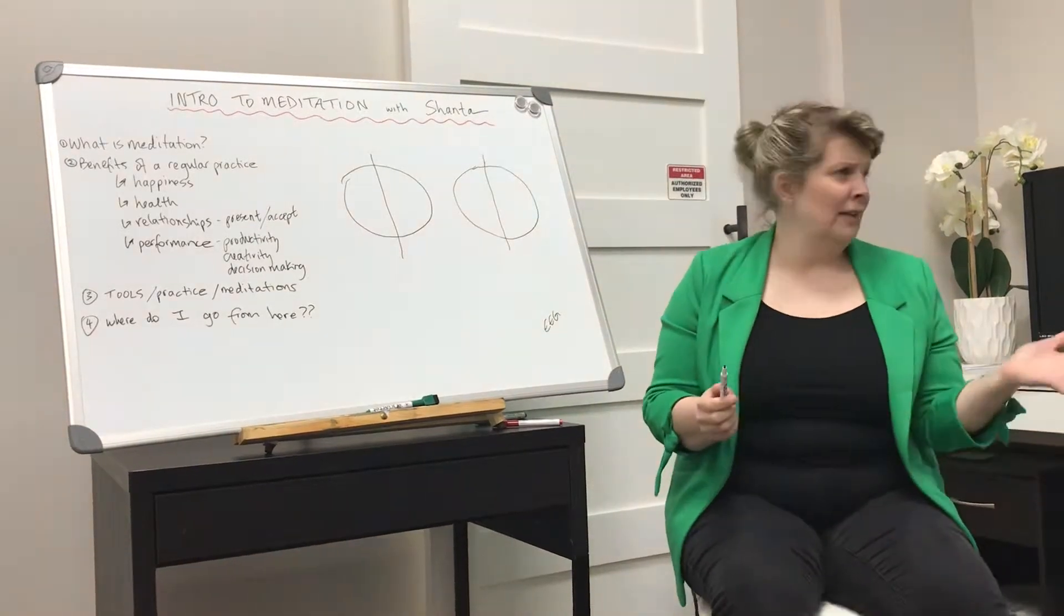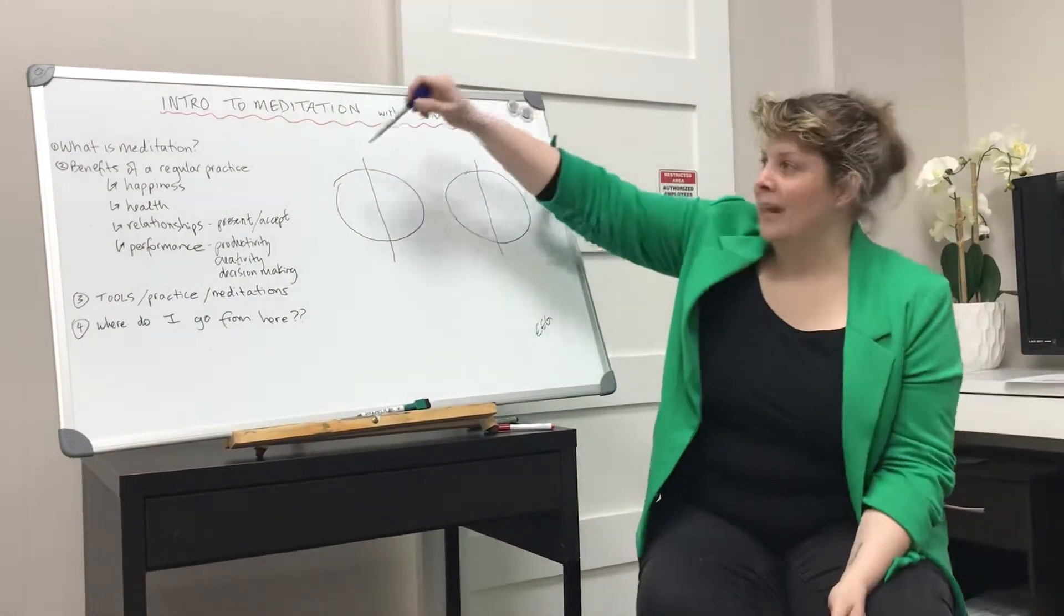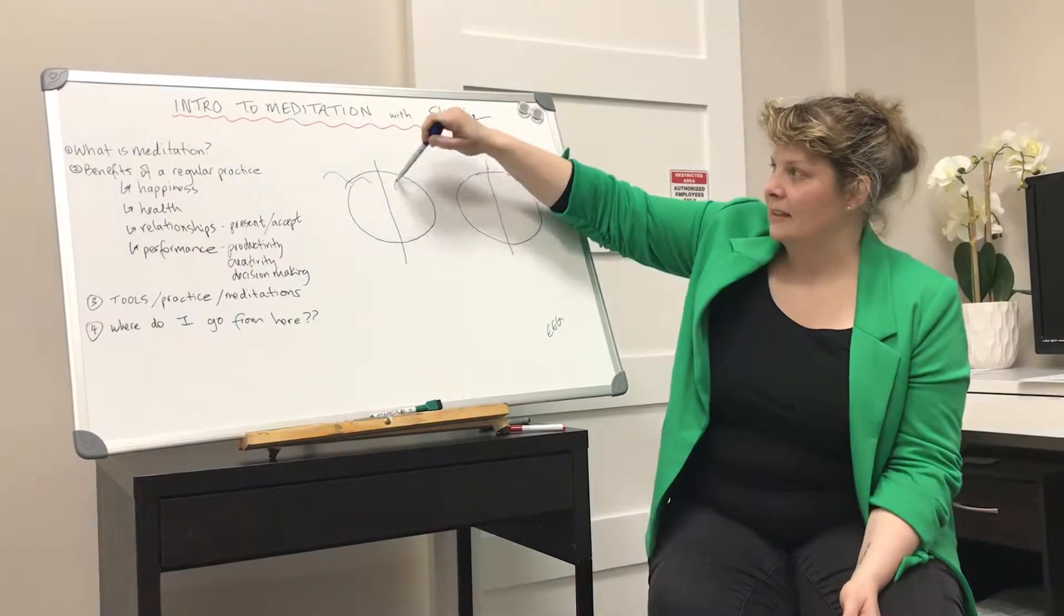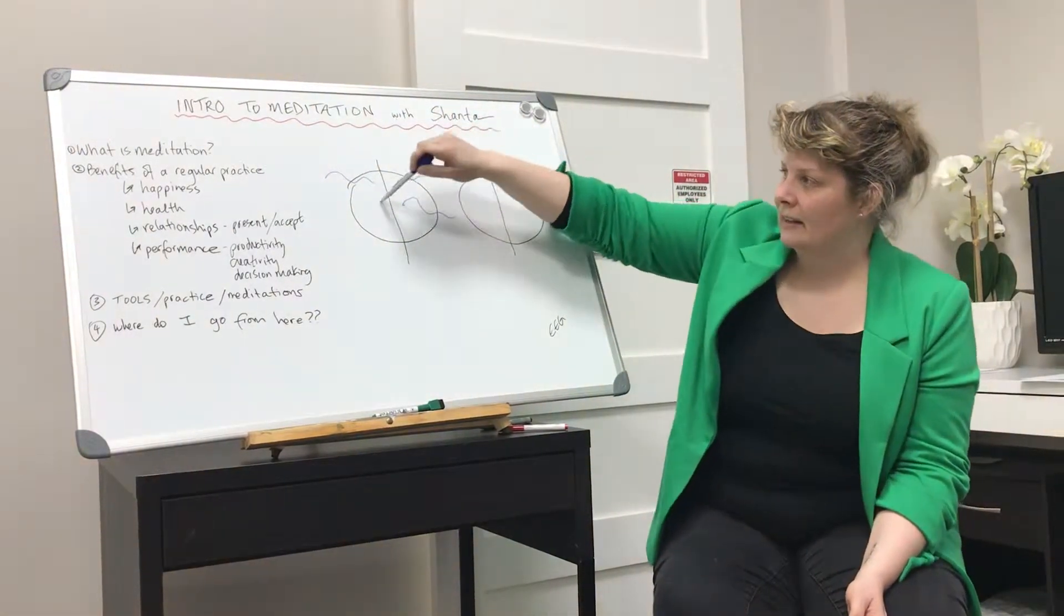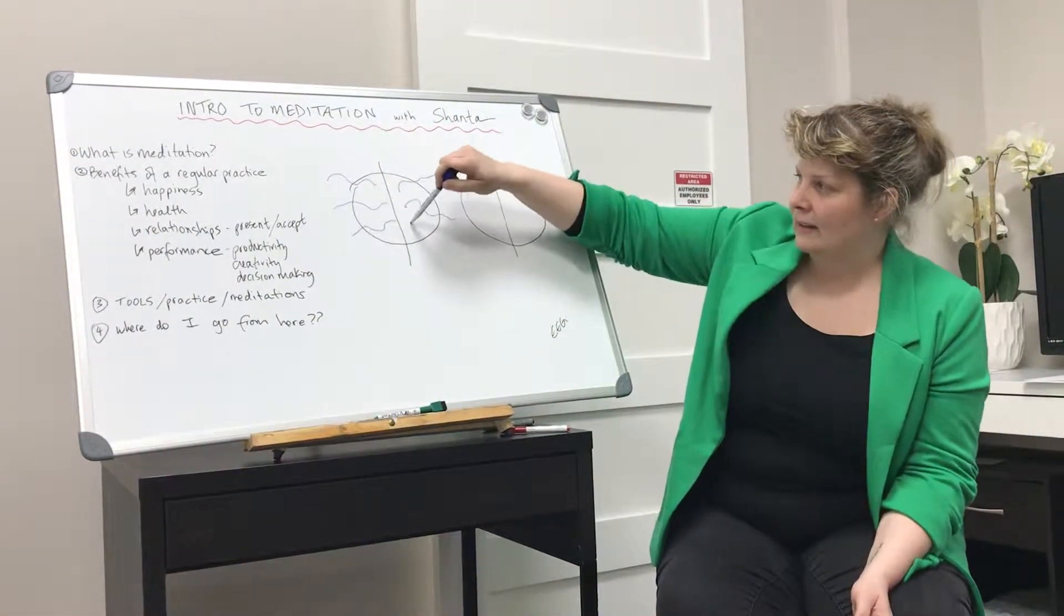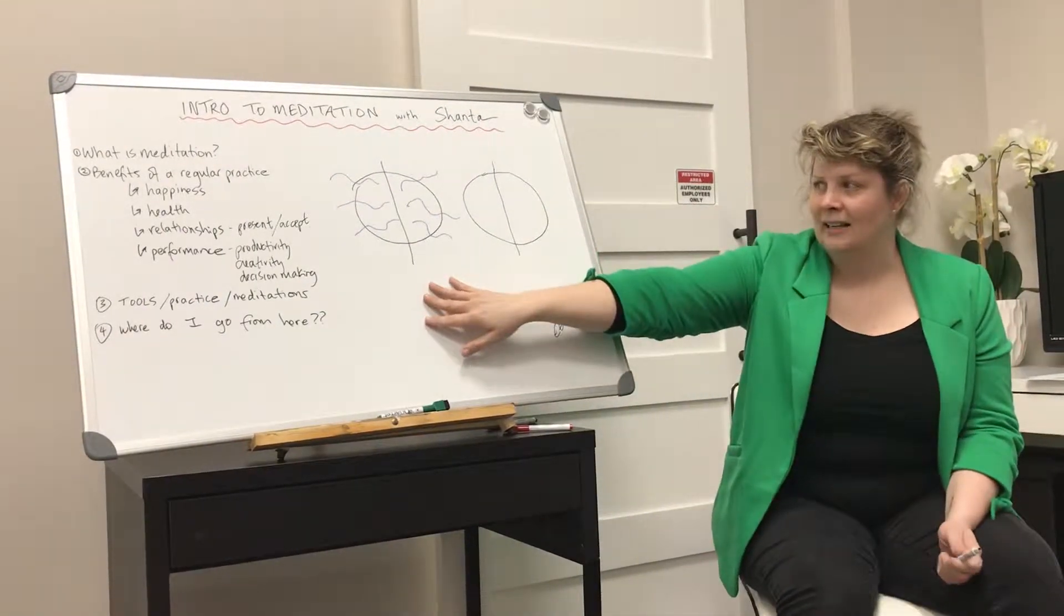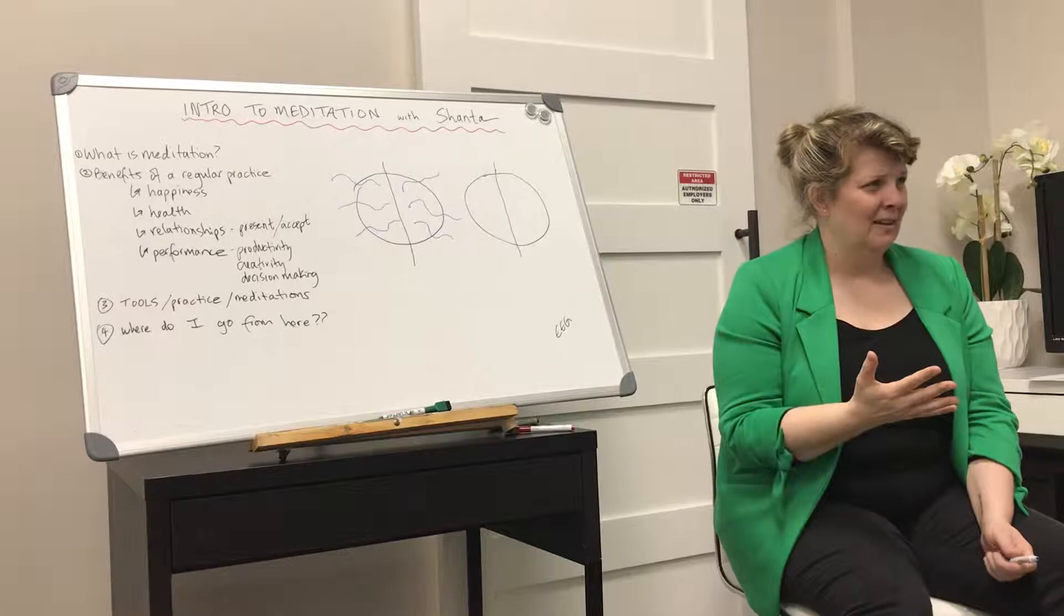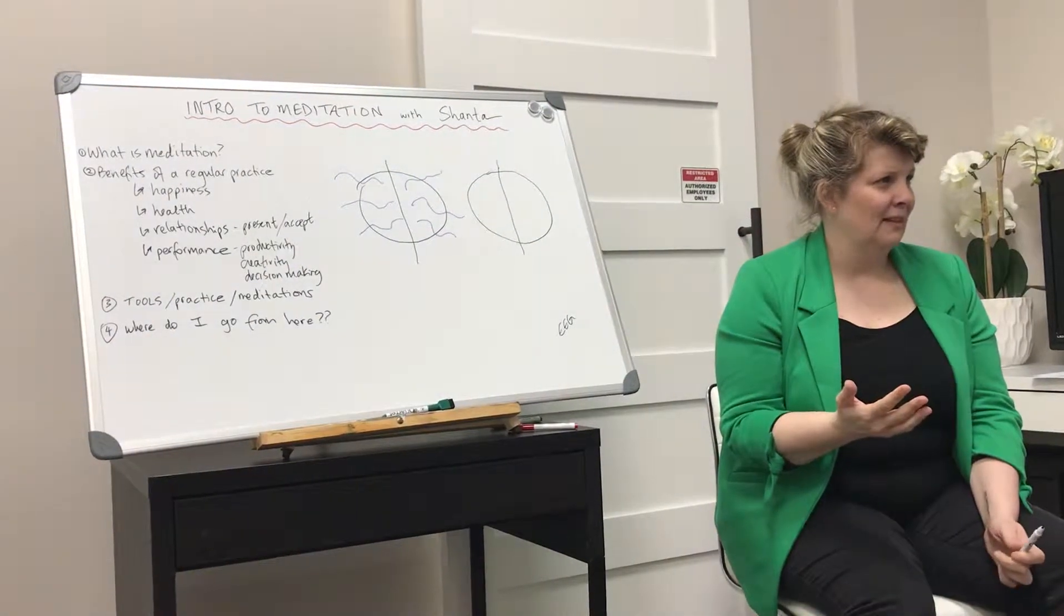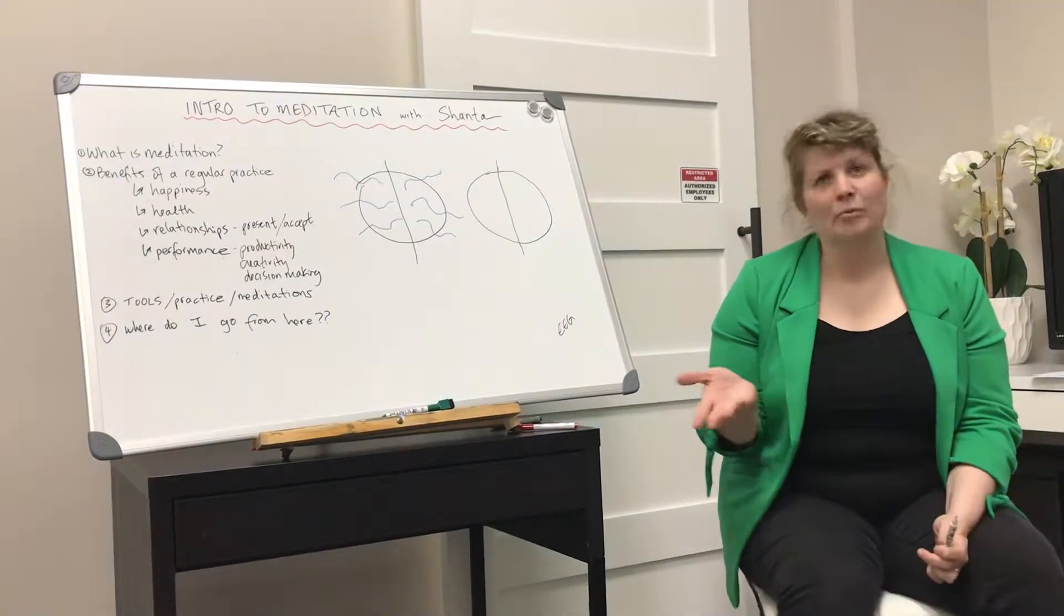The problem is that most of us are running around in the world and our brain looks like this. The issue with this brain is that it's not very coherent and it's not very harmonious. It's kind of like what we talked about—it's not very present.